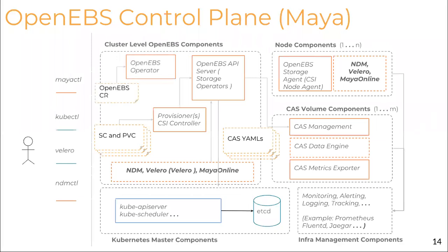The last piece is about the operator that's getting added in 0.9. The custom resource for OpenEBS is available that can help with what data engines to enable, and the ability to run kubectl get openebs to check the status of the various components.